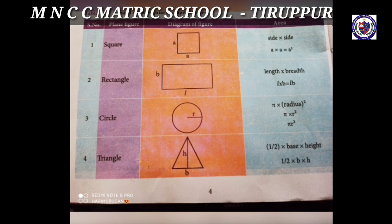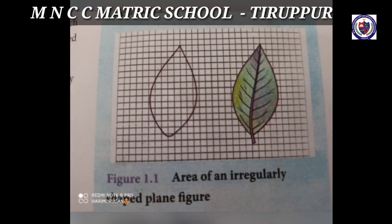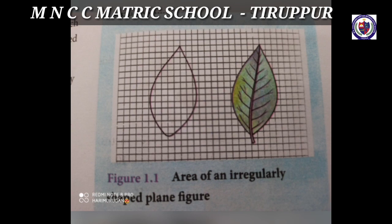How can we find out the area of irregularly shaped objects? The area of an irregularly shaped object can be found by using a graph sheet.